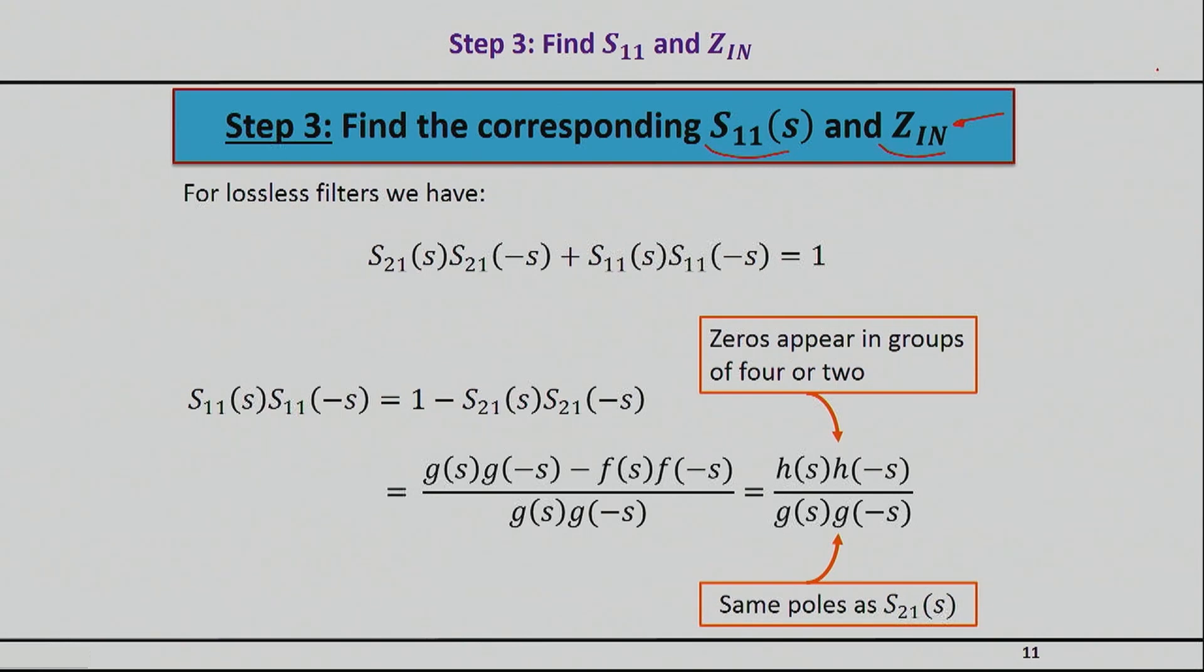So let's go step by step. I do know the S21, and in the amplitude domain I know that S21 squared plus S11 squared should be equal to one if I have a lossless filter.